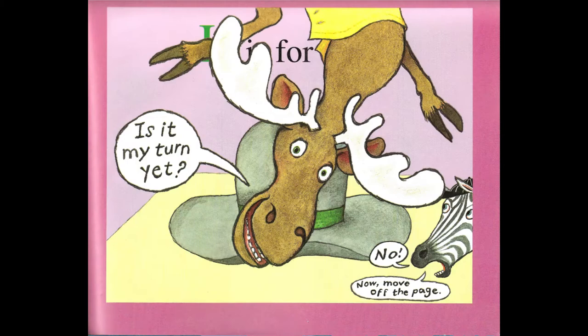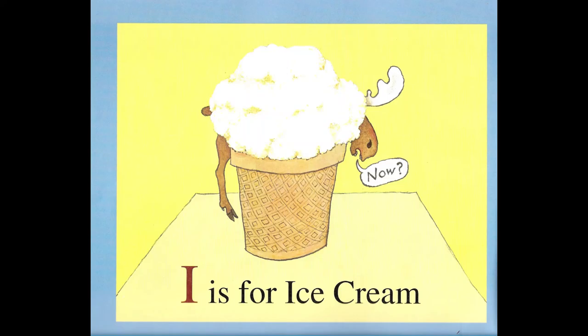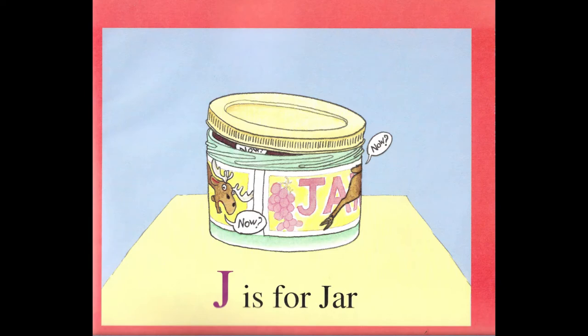H is for Hatch. Now? I is for Ice Cream. J is for Jar. Now?